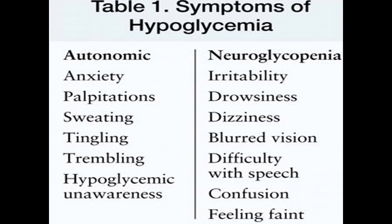Hypoglycemia usually occurs due to two things: when the patient takes an overdose of insulin by mistake, or when the patient takes insulin but misses a meal. You take insulin, set out for a journey, and miss breakfast or lunch — the insulin works and all your glucose is utilized, leading to a hypoglycemic state. Hypoglycemia usually starts when your glucose level decreases below 50 mg/dL — symptoms start and the patient may become unconscious.